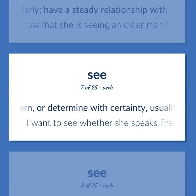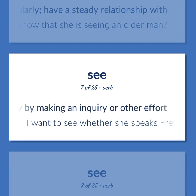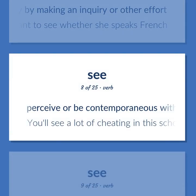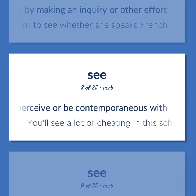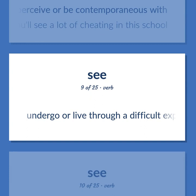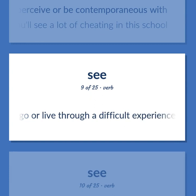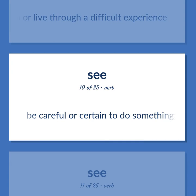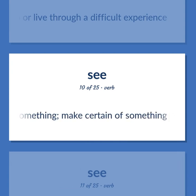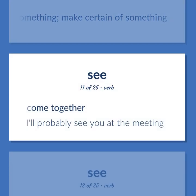Find out, learn, or determine with certainty, usually by making an inquiry or other effort — I want to see whether she speaks French. Perceive or be contemporaneous with — you'll see a lot of cheating in this school. Undergo or live through a difficult experience. Be careful or certain to do something; make certain of something. Come together — I'll probably see you at the meeting.